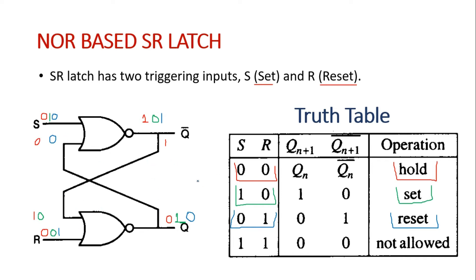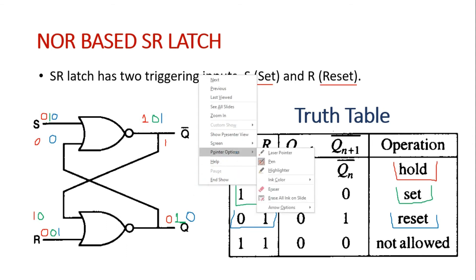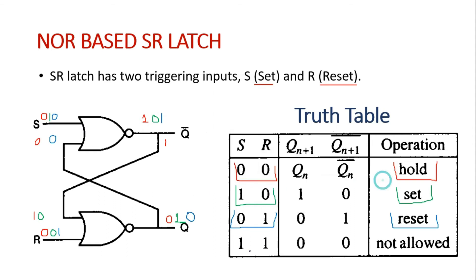Now if we have S=1 and R=1 — both inputs are 1 — the output is not going to be stable. Therefore, this condition is not allowed in the SR latch. What happens is the output of the first NOR gate becomes 0 and the second NOR gate also becomes 0, meaning Q and Q bar both become 0, which is not allowed since Q and Q bar cannot have the same value.